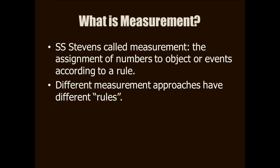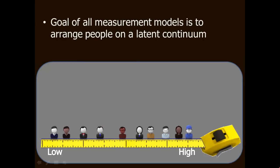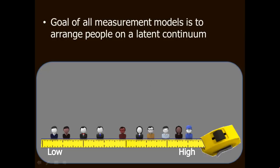Whether you're using classical measurement or item response theory, the goal is the same. You want to align people on a continuum from low to high, or from sicker to healthier. Suppose you want to measure pain, for example. The goal of measurement is to discriminate among people who have low pain, who have high pain, and every level in between. If your measurement strategy works well, you can make fine distinctions among different levels of pain.